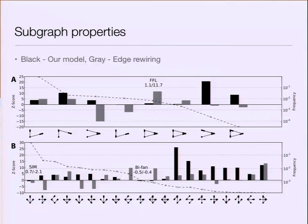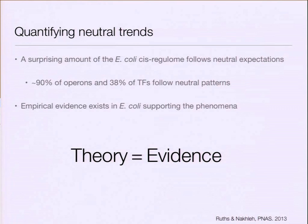I was also able to show that popular network motifs like feed-forward loops actually arise with the same expectation you would expect by chance — just neutral evolution. We were able to quantify these neutral trends in a real network, which no one had ever really been able to do before. I would finally say that we now have theory that matches the evidence we're getting back from these regulatory networks, and this work helps give us an idea of what's really going on and what's forming these networks.